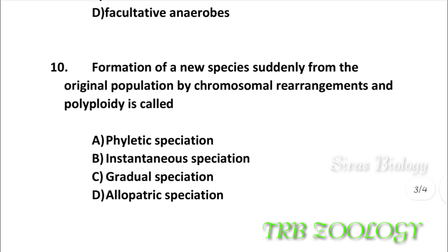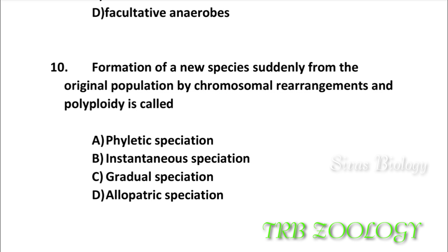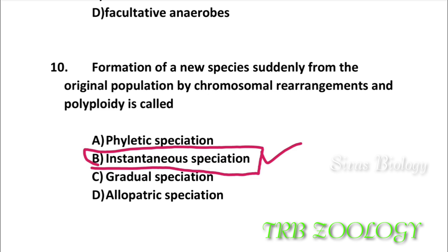Question number 10: The formation of new species suddenly from the original population is called what? Options: instantaneous speciation, gradual speciation, allopatric speciation. The correct answer is instantaneous speciation.